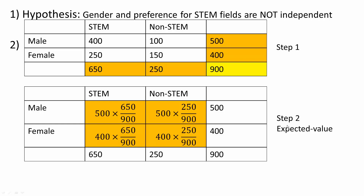Next, we need to calculate the expected value. For males who prefer STEM: 500 times 650 divided by 900. For males who prefer non-STEM: 500 times 250 divided by 900. For females who prefer STEM: 400 times 650 divided by 900. For females who prefer non-STEM: 400 times 250 divided by 900.